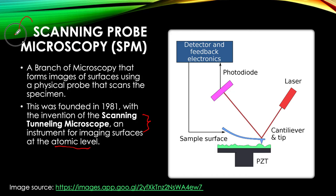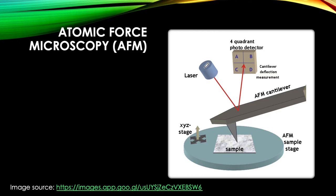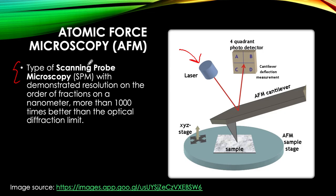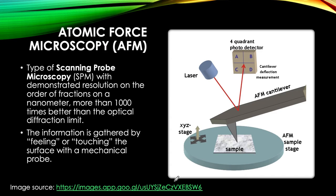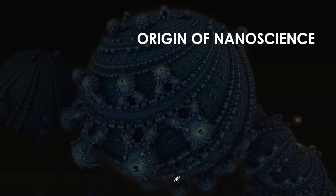Next we'll talk about the AFM — atomic force microscopy. This diagram explains how it works. It still uses a laser, which is why it's one type of scanning probe microscope or SPM, with demonstrated resolution on the order of fractions of a nanometer — more than one thousand times better than the optical diffraction limit. The information is gathered by feeling or touching the surface with a mechanical probe, feeling the surface with this mechanical probe.